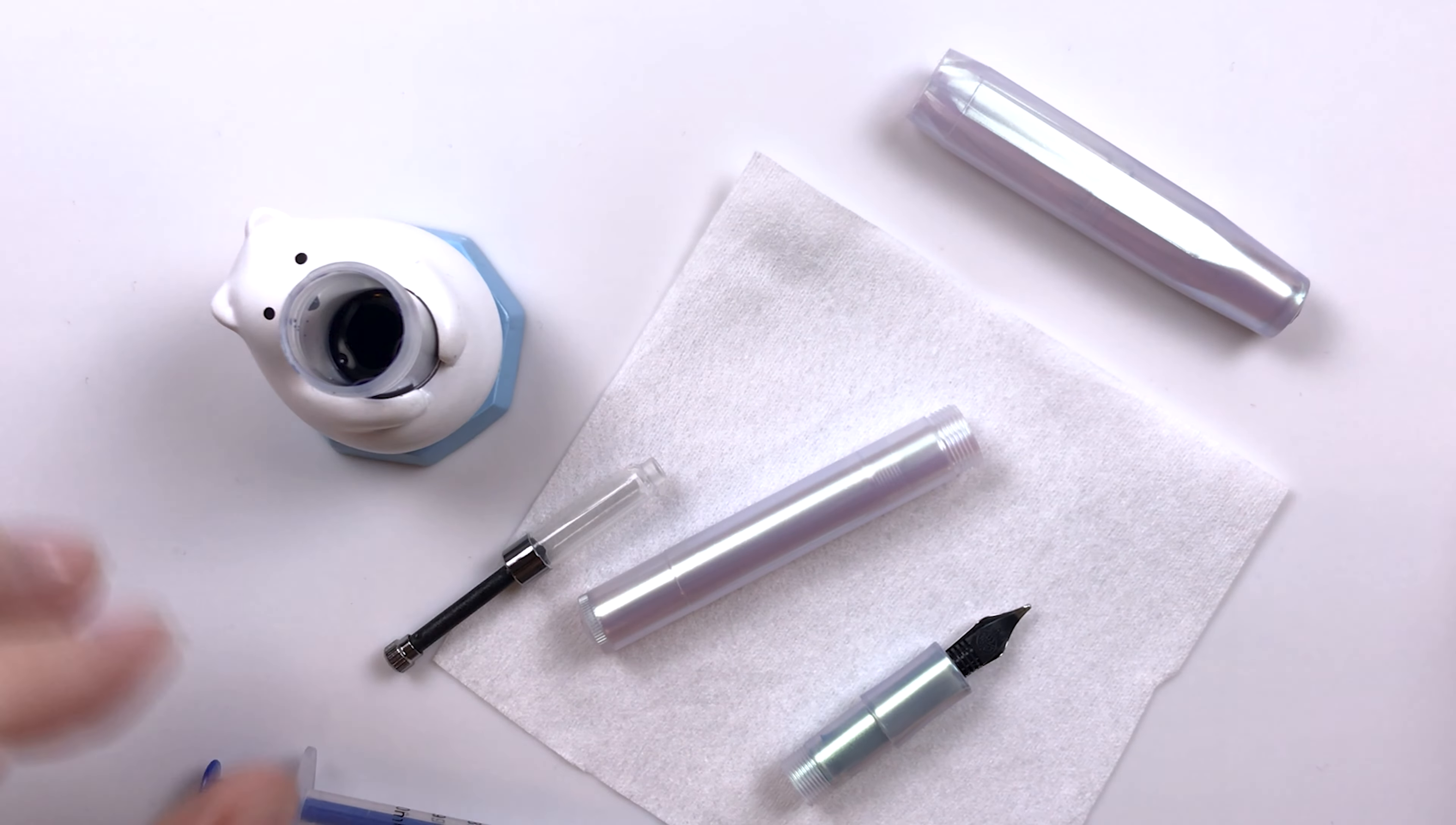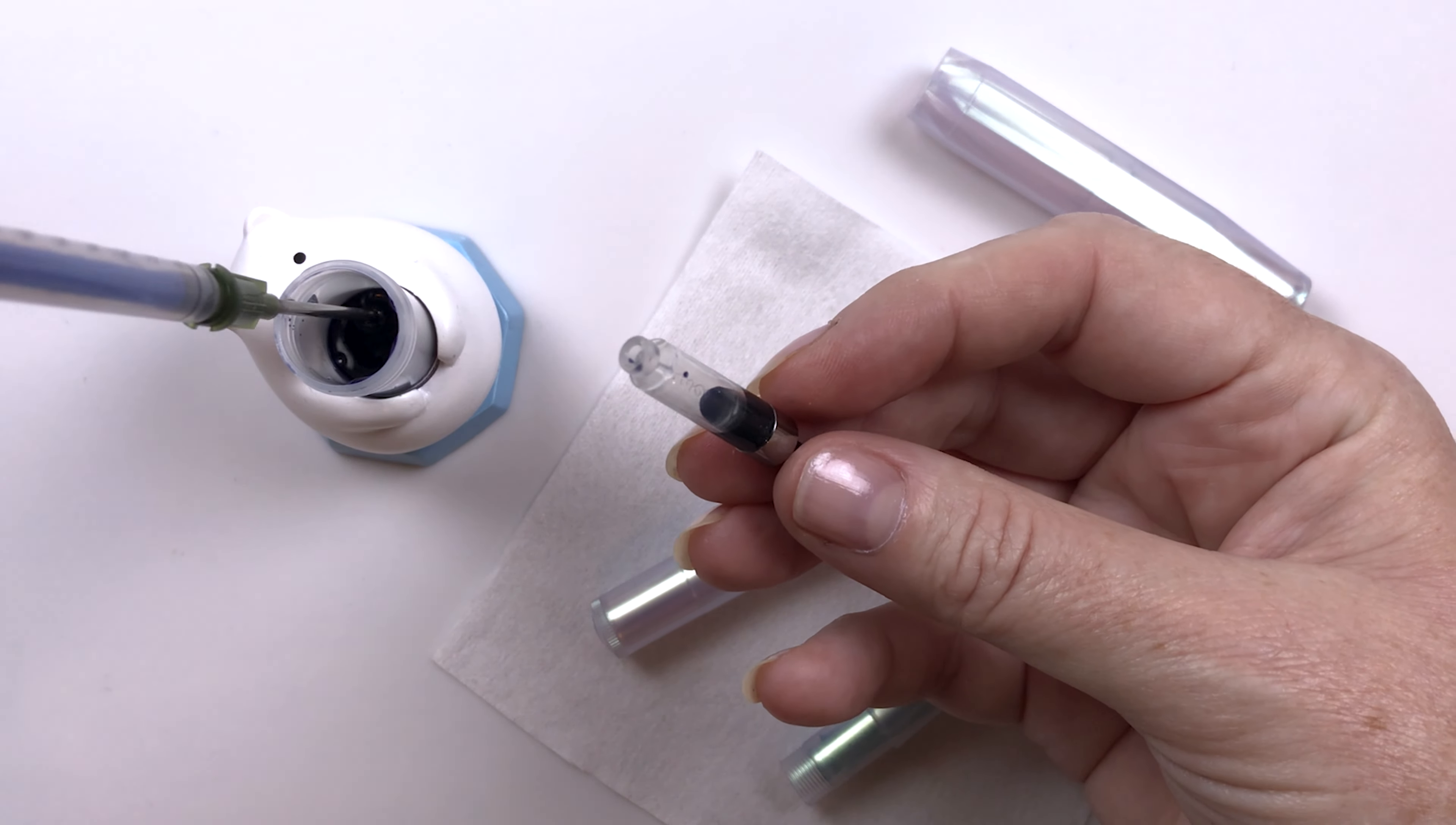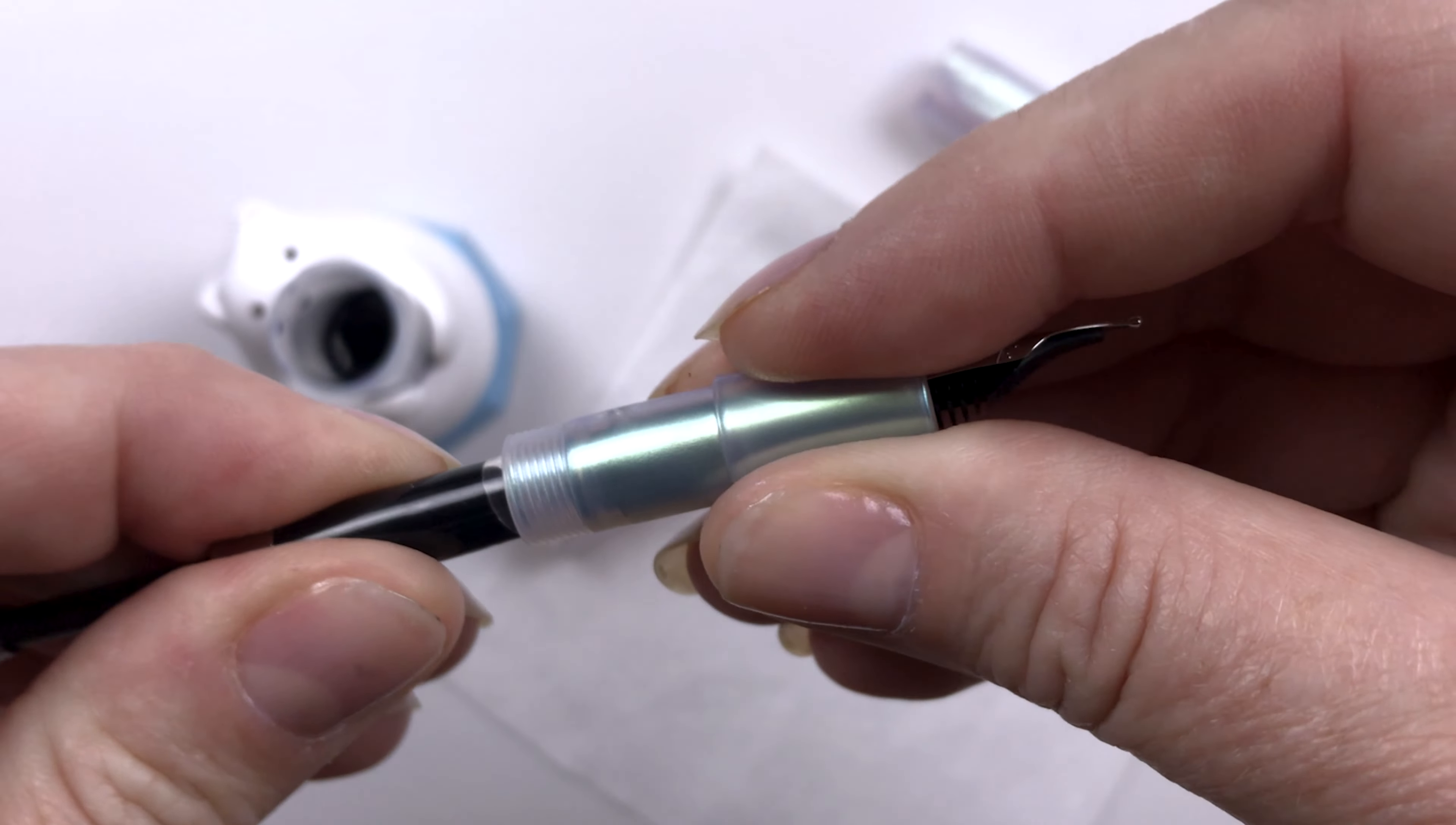And I like to fill it up using a syringe. You can attach the converter to the section and pull it through the nib but I feel like it gets a lot of ink on the section and I don't like that especially with lighter colored pens. So I tend to just use the cartridge and fill it up and then I'll prime it a little bit by pressing it and so that will push some of the ink into the nib and that just makes it flow faster when you're going to start writing.